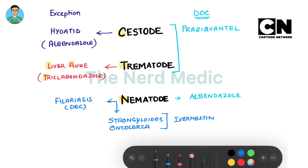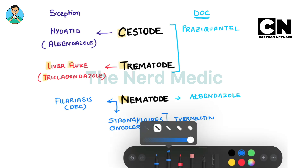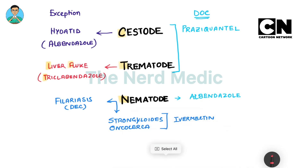You can remember: in case of strong pathogens or diseases like cancer or oncology, we have to use IV drugs. So strongyloides, onchocerca, ivermectin. This briefly summarizes the map of anti-helminth drugs that we use in common practice.